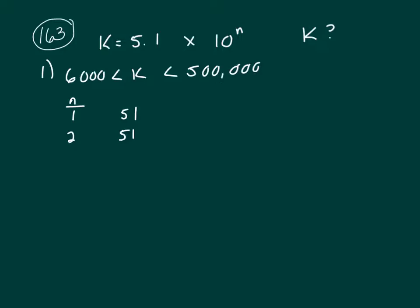For n=2, it's going to be 510. For n=3, it's going to be 5,100. For n=4, that's going to be 51,000. And for n=5, it's going to be 510,000.